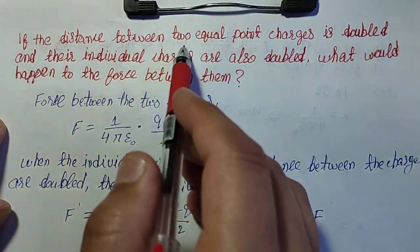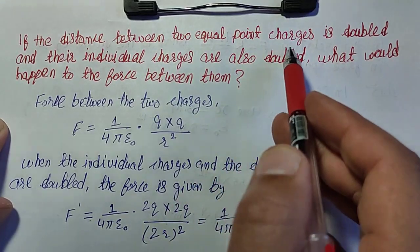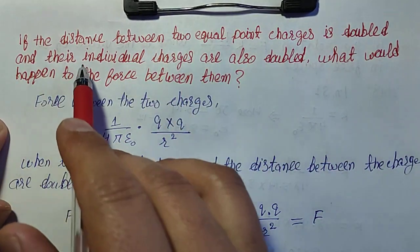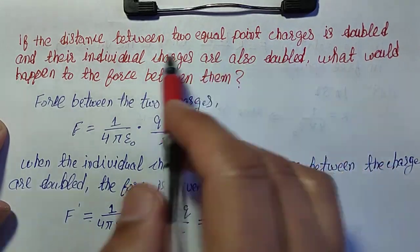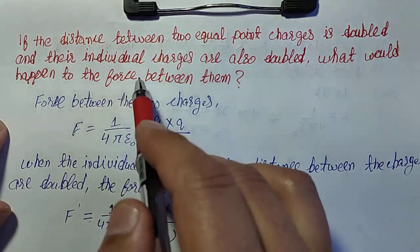If the distance between two equal point charges is doubled and their individual charges are also doubled, what would happen to the force between them?